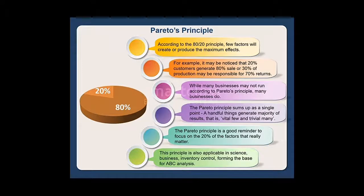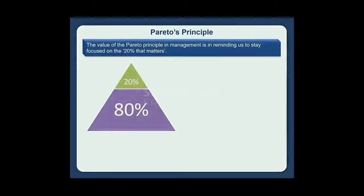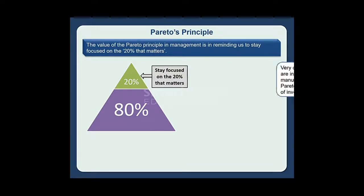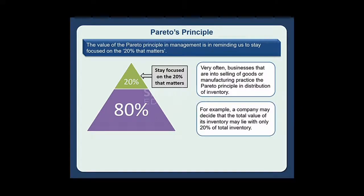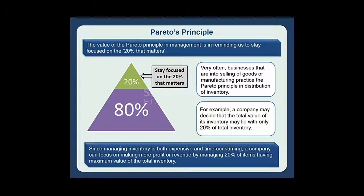This principle is also applicable in science, business, and inventory control, forming the base for ABC analysis. The value of the Pareto principle in management is in reminding us to stay focused on the 20% that matters. Businesses that sell goods or manufacture products practice the Pareto principle in distribution of inventory. For example, a company may decide that the total value of its inventory may lie with only 20% of total inventory. Since managing inventory is both expensive and time-consuming, a company can focus on making more profit by managing the 20% of items having maximum value.